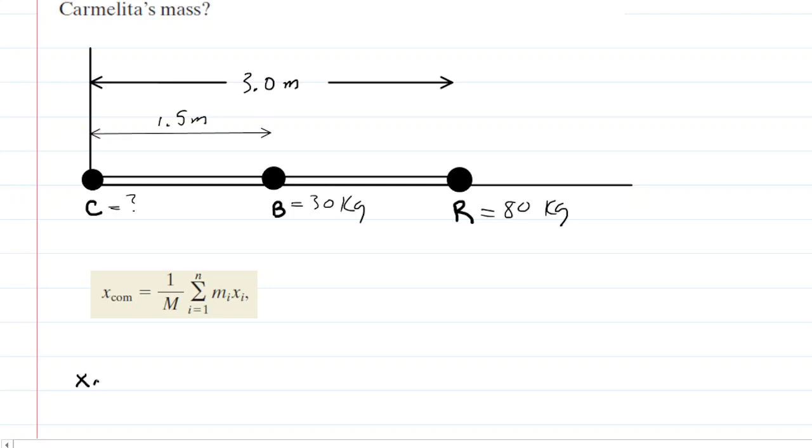We have the equation presented right here, and we can see that we have to divide one by the total mass of the system. Well, that would be the mass of Carmelita plus the mass of the boat plus the mass of Ricardo. And then we multiply that by this summation. In the summation, you just take the mass of each particle and multiply it by its x-coordinate.